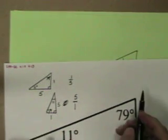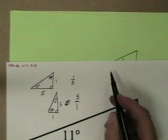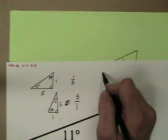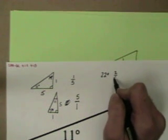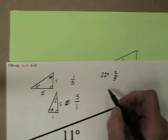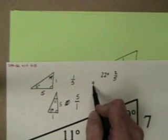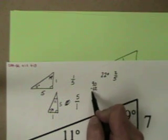The same thing happens in a 22 degree triangle. In a 22 degree triangle, the ratio was 2 fifths, and we're going to find that—let's see what 90 minus 22 is so we can find its complement.